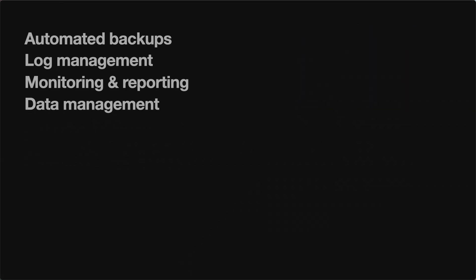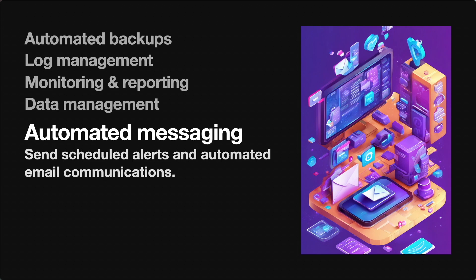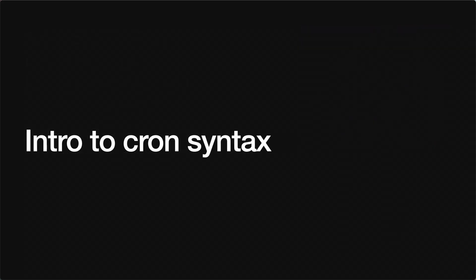And then finally on this list — and this is by no means an exhaustive list — is automated messaging. You can set up cron jobs to send scheduled alerts and other kinds of communications to both internal staff as well as external users for your application. If you've ever encountered a cron job in the wild, you will likely have noticed that there is a specific syntax associated with the way that they are scheduled.